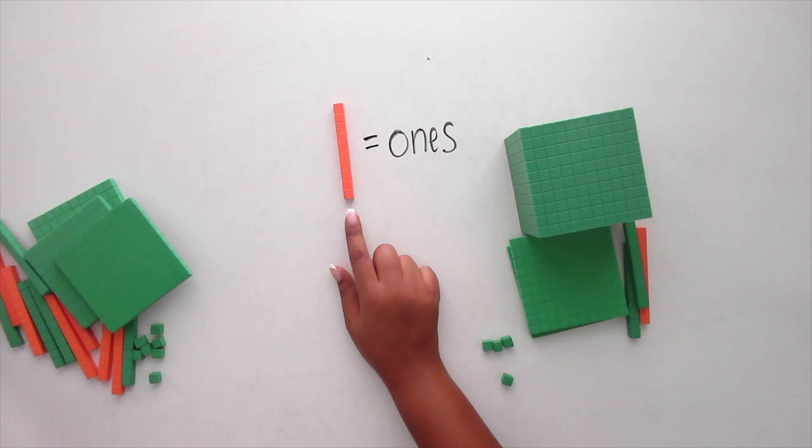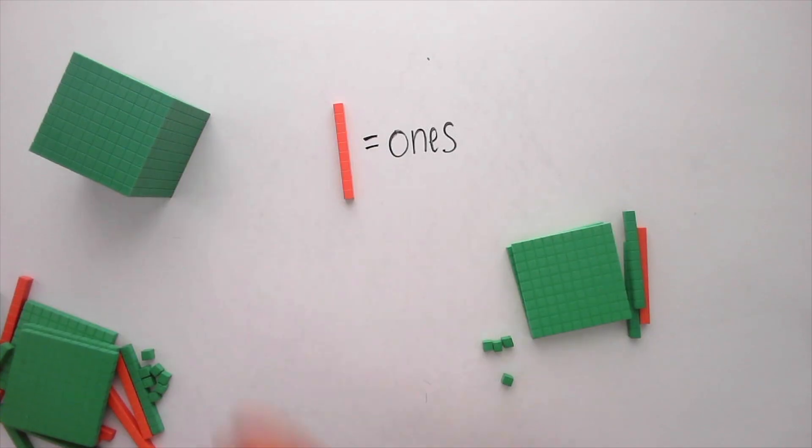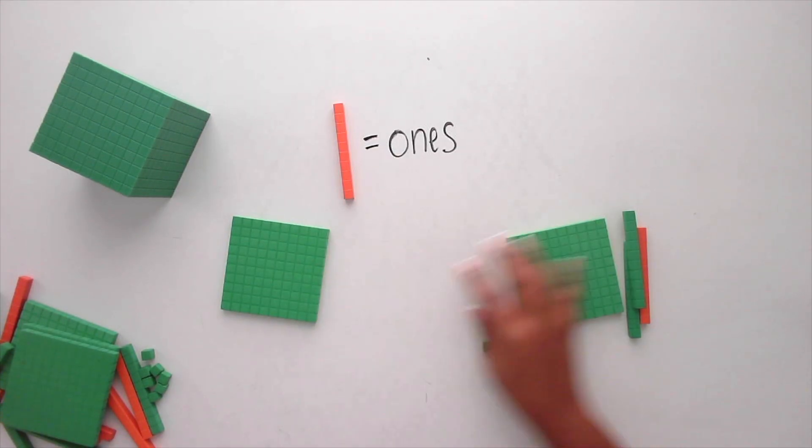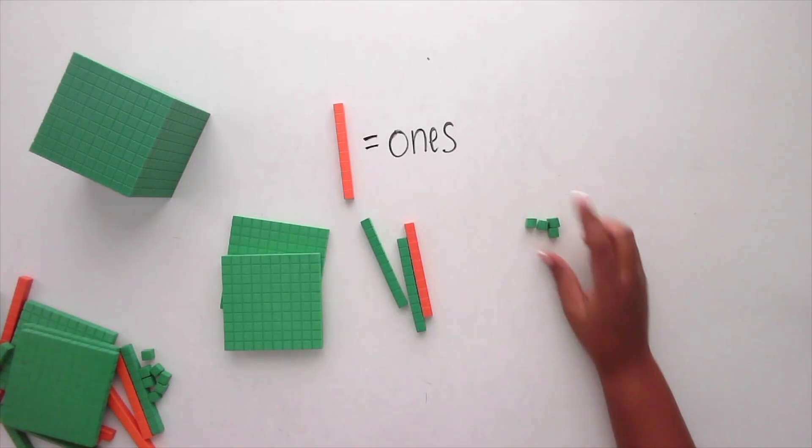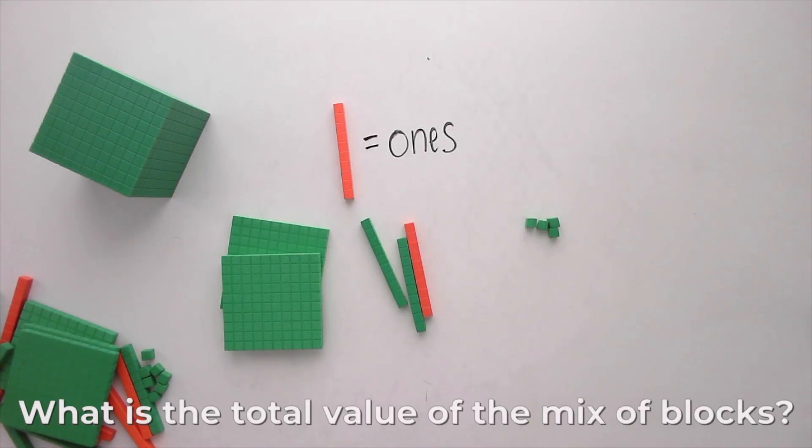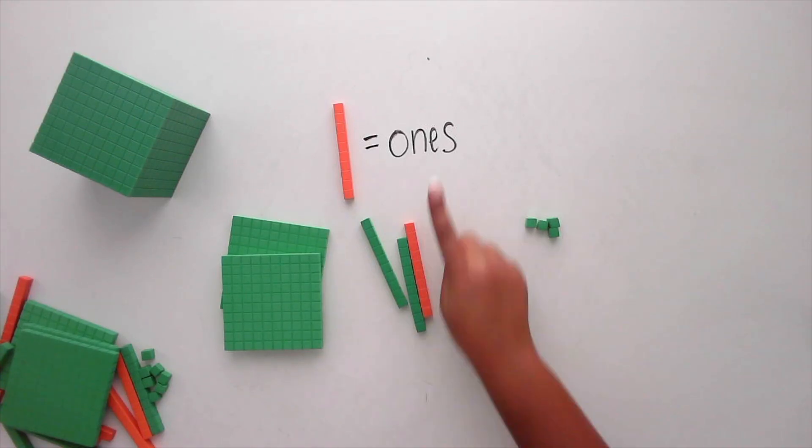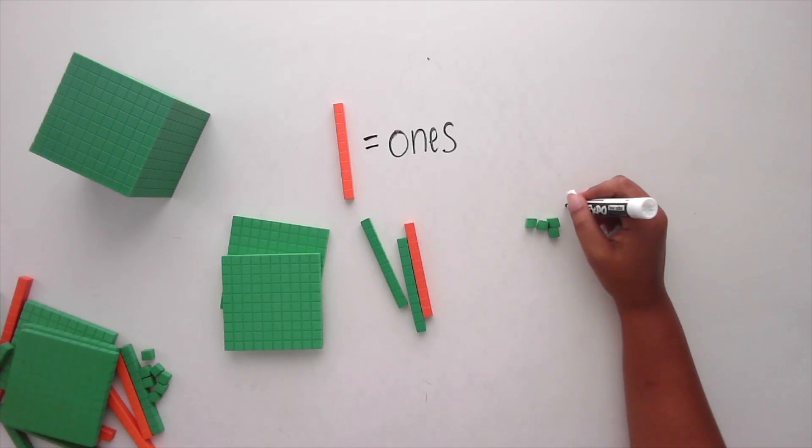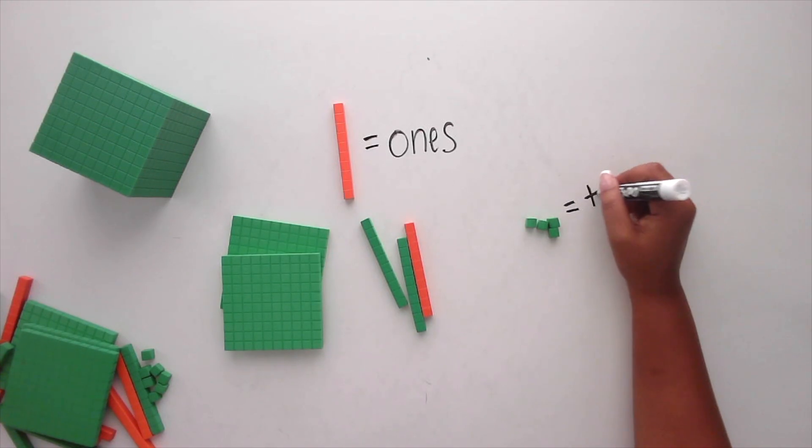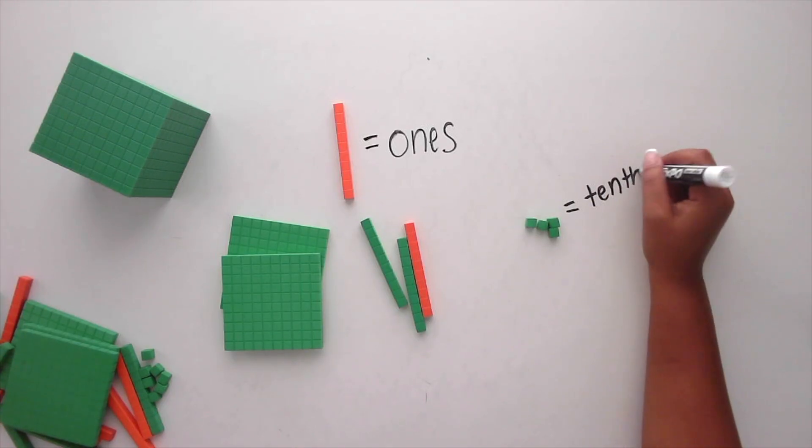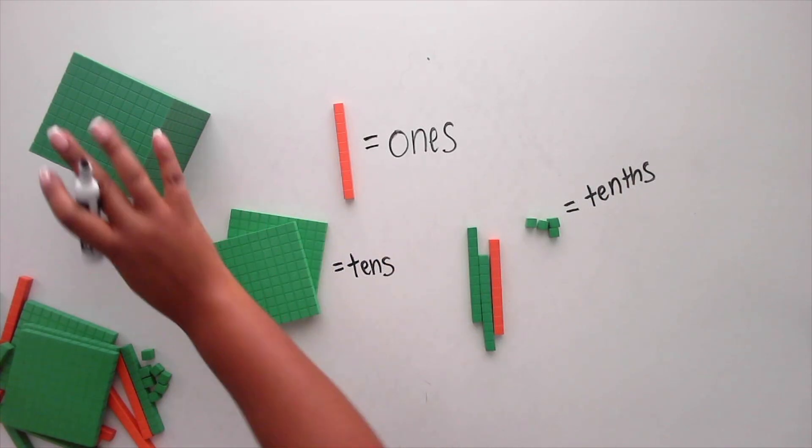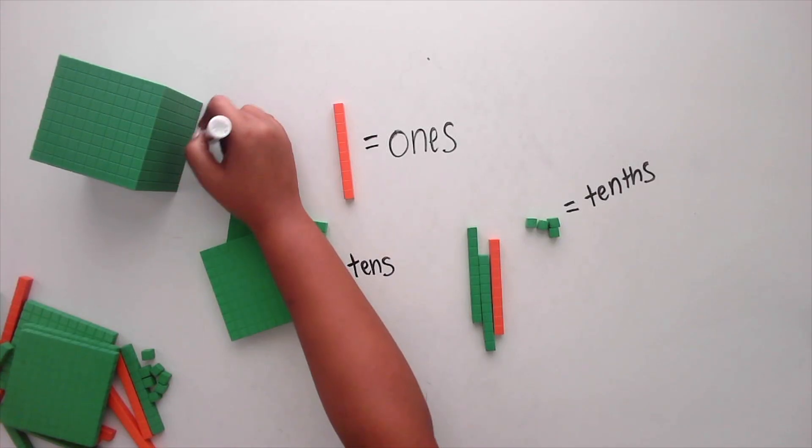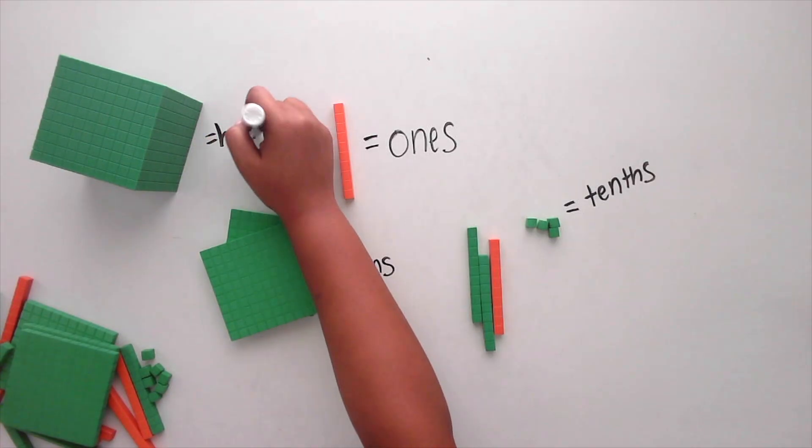So if the rods are ones, what do the large cubes, flats, and unit cubes represent? And what is the total value of the mix of blocks? If the rods are ones, then the units are tenths, the flats are tens, and the large cubes represent hundreds.